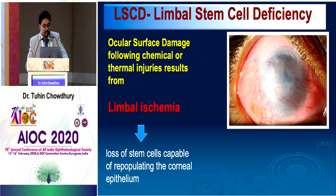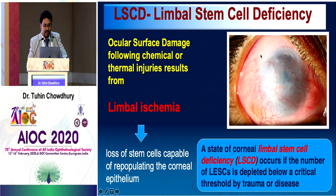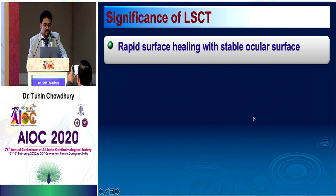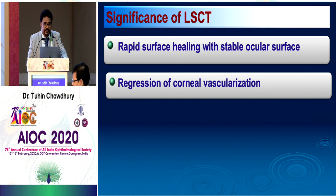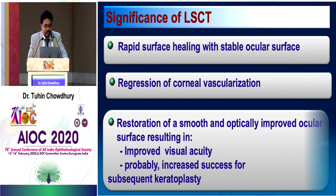When the number of limbal epithelial stem cells is depleted below a critical threshold level by trauma or disease, corneal limbal stem cell deficiency (LSCD) occurs. The only treatment is limbal stem cell transplantation. A successful transplantation can achieve rapid surface healing with stable ocular surface, regression of corneal vascularization, no recurrent or persistent epithelial defects, restoration of a smooth optically improved surface with improved visual acuity, and increased success for subsequent keratoplasty.